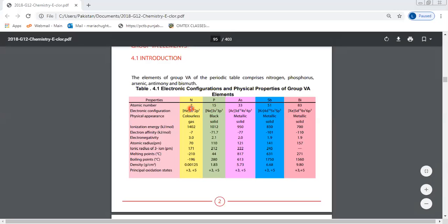The atomic numbers: nitrogen is 7, phosphorus is 7 plus 8 equals 15, plus 18 is 33, then plus 18 is 51, and adding 32 gives 83 for bismuth.